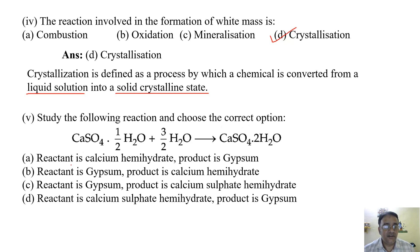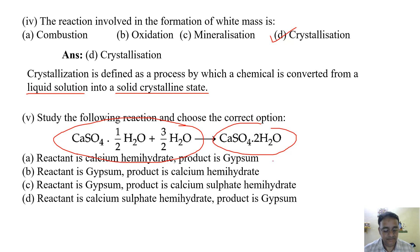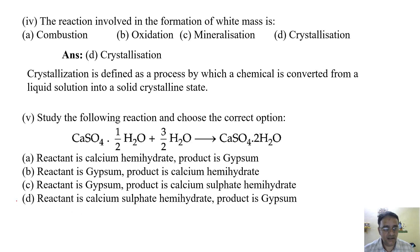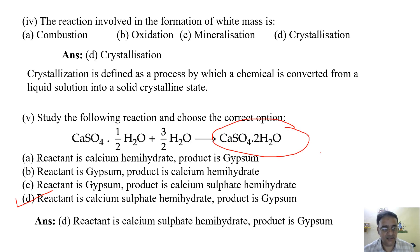Question five: Study the following reaction and choose the correct option. The options are: reactant is calcium hemihydrate and product is gypsum; reactant is gypsum and product is calcium hemihydrate; reactant is calcium sulfate hemihydrate and product is gypsum; reactant is gypsum and product is calcium sulfate hemihydrate. The correct answer is option four — reactant is calcium sulfate hemihydrate and product is gypsum. This is the last question of this case study.